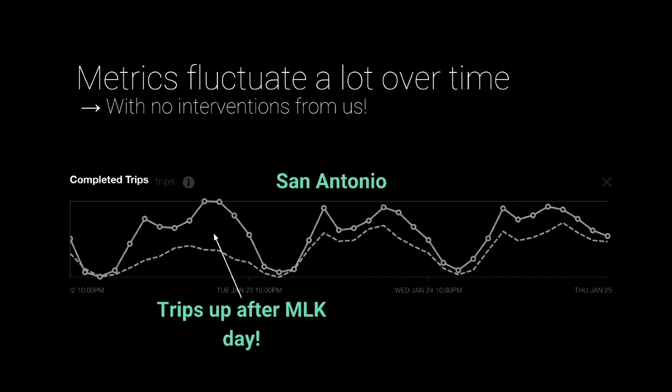The other problem is we can't really use historical data for percent-level comparison of a change. Week over week, we have huge variation in our standard metrics. For example, in San Antonio, a week-over-week plot shows literally a 3x difference in the number of trips — basically because we had MLK Day the week before, which causes that kind of shift. So we can't really use historical data.